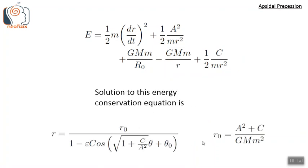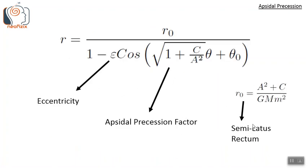The solution to this modified energy conservation equation is: r = r₀ / [1 − ε·cos(√(1 + c/A²)·θ + θ₀)], where θ₀ is a constant of integration determined by initial conditions, and r₀ is a constant called the semi-latus rectum, given by (A² + c) / (GM·m²).